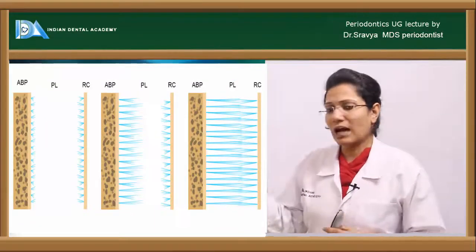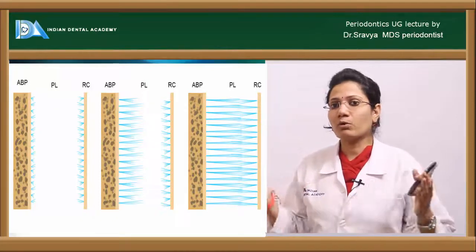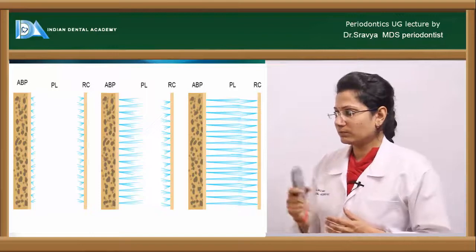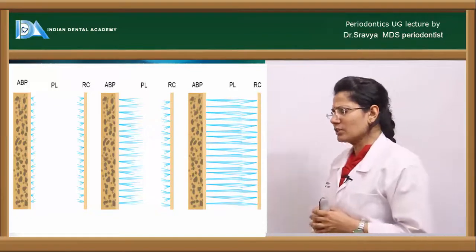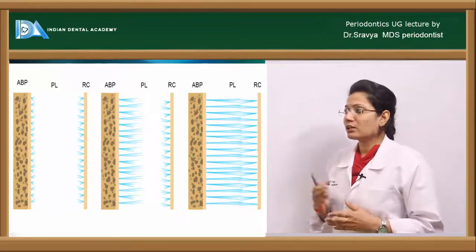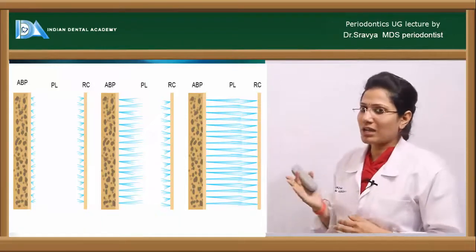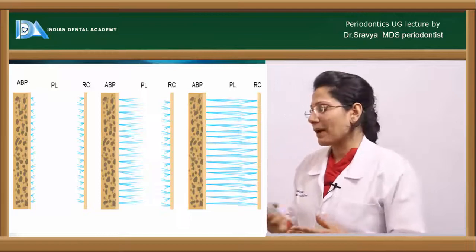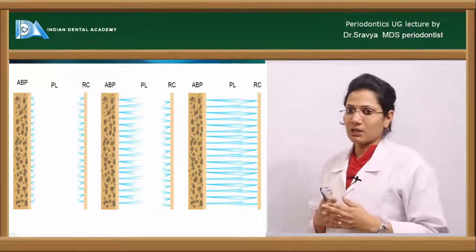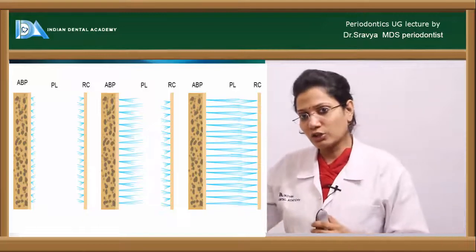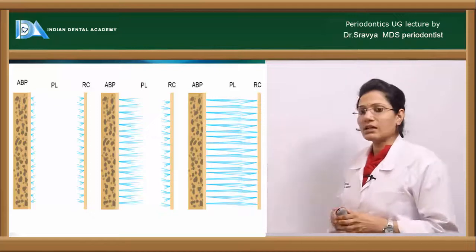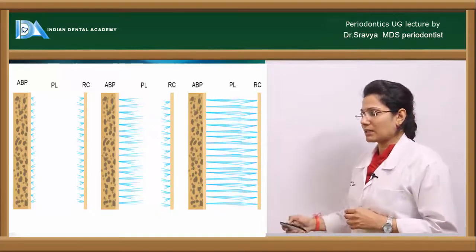The periodontal ligament forms from both sides — from the bone and from your cementum. The root cementum (RC) and the alveolar bone process (ABP) contribute fibers. The fibers from the alveolar bone processes are longer compared to the fibers from the cementum. They intermingle with each other, forming the periodontal ligament fibers, and the center area is called the intermediate plexus.